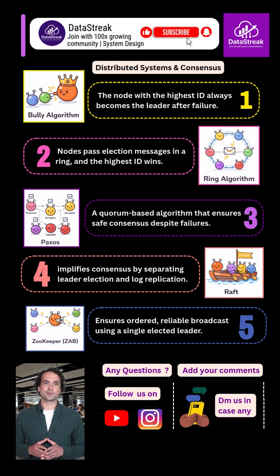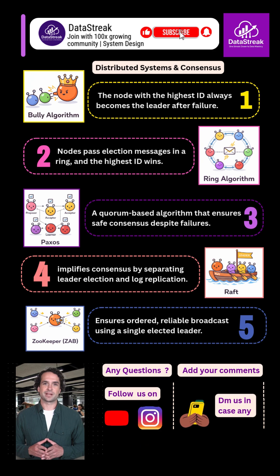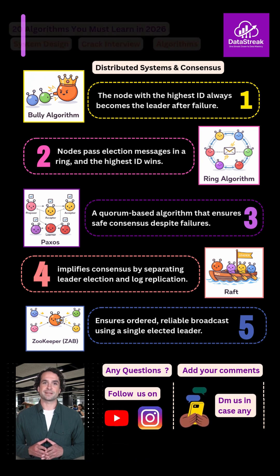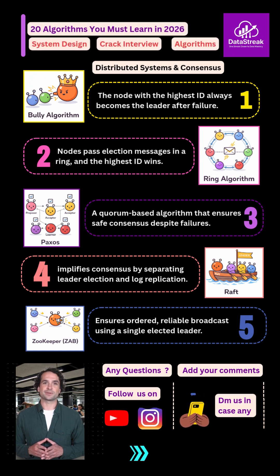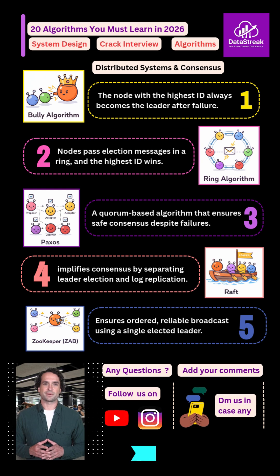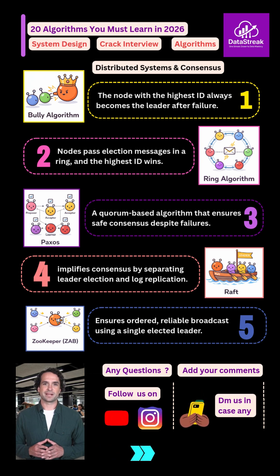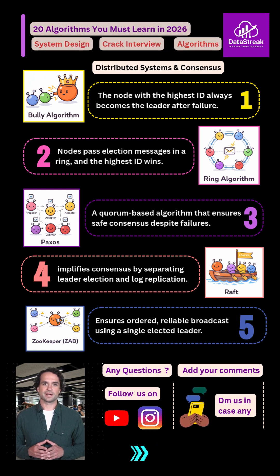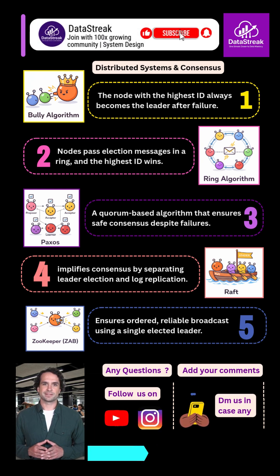Let's start with distributed systems. Leader election algorithms like Bully, Ring, Paxos, Raft, and ZooKeeper Zab decide who leads when failures happen. These power databases, coordinators, and cloud control planes.